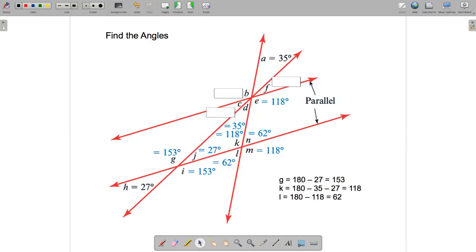K and B. This angle here, and this angle here. Those are corresponding. And K is 118. So B must be 118. Actually, we know it's 118 because it's opposite E. So there's two reasons why we know that B is equal to 118.